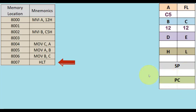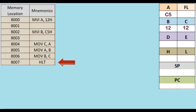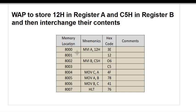Now let us execute this program on two different platforms — one PC-based and one mobile-based. Whenever we write an 8085 program we make four columns: the leftmost column contains the memory location, the second contains the mnemonics, the third contains the hex code, and the fourth contains the comments. We need to find the hex code for each and every instruction.